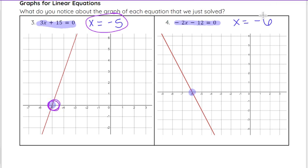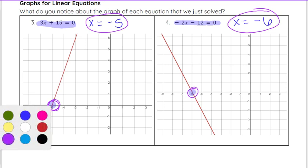Same concept here on number 4. X equals negative 6 is what we got on the last page when we solved algebraically, and negative 6 is where it crosses on the X axis. So when you solve an equation algebraically for the solution of that linear equation, you're really finding the point where it crosses the X axis.